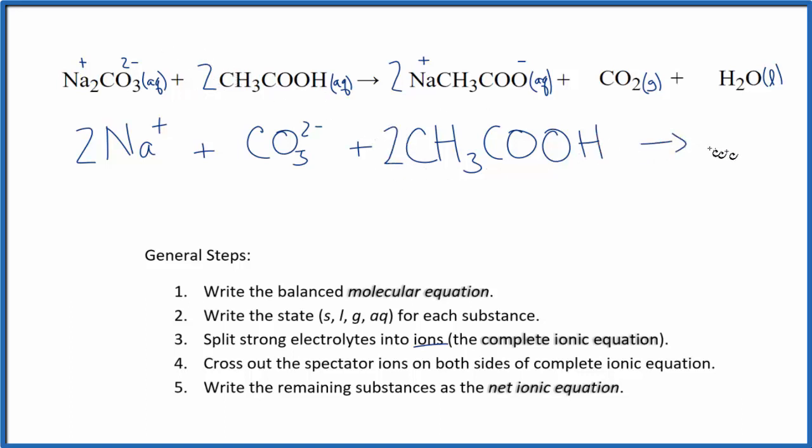For our products, we said that Na is going to dissociate. That has that aqueous plus, we have 2 of those. Plus we have CH3COO-, the acetate ion. And this 2 applies to everything, so we have 2 of those. Plus CO2, plus H2O. So this is the complete ionic equation. It includes everything. We've split up the strong electrolytes and we've left things like weak acids, gases, and liquids together.